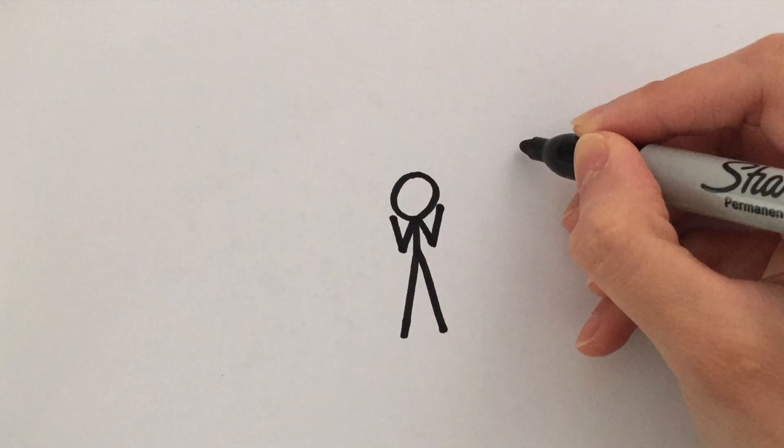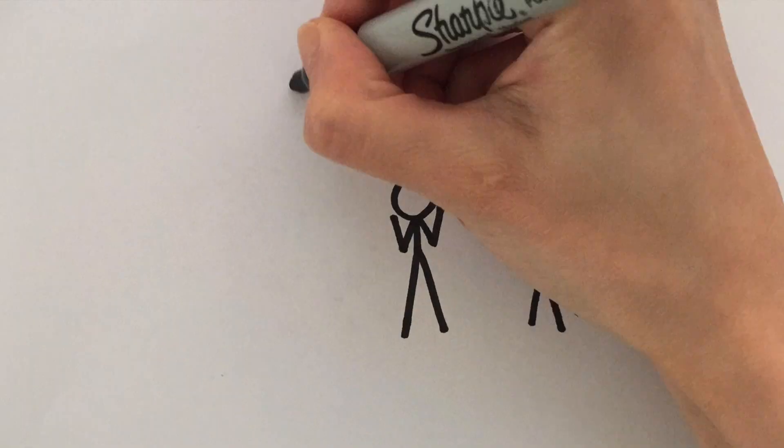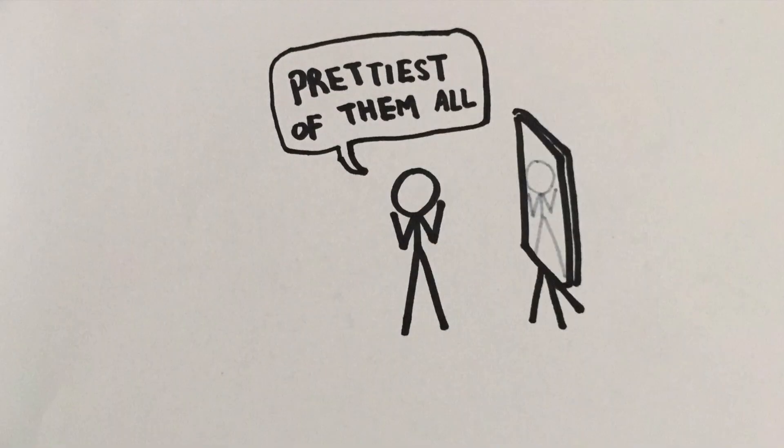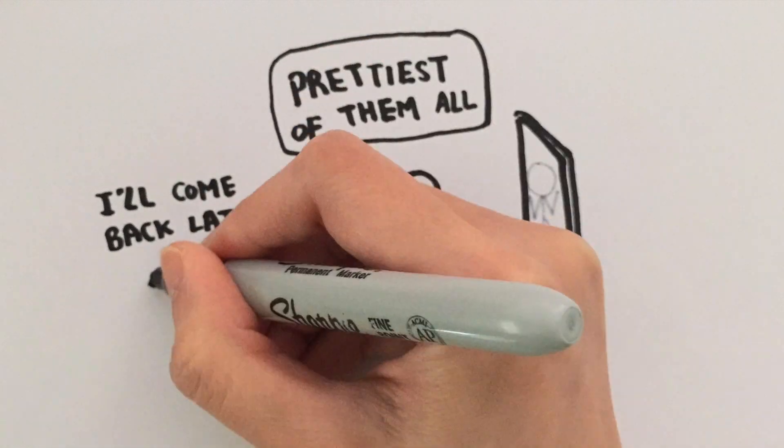When you look into a mirror, the image of you seems to come from deep inside the mirror. Again, ray diagrams can tell us exactly where this image is formed.